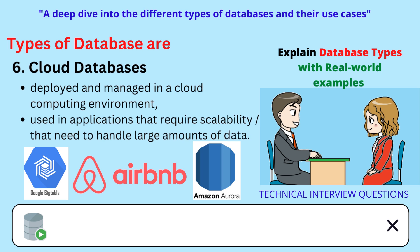Cloud databases are designed to be deployed and managed in a cloud computing environment, and they are often used in applications that require scalability or that need to handle large amounts of data. Examples include Amazon Aurora and Google Cloud Bigtable. Airbnb uses Google Cloud Bigtable to store property listings, user profiles, and other data, improving the performance and scalability of the Airbnb platform.